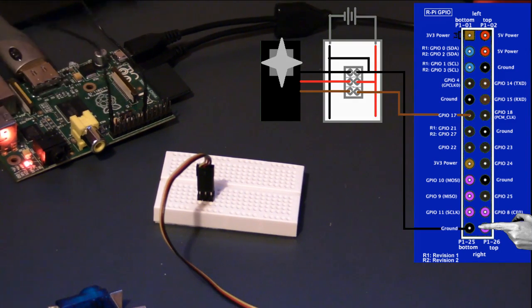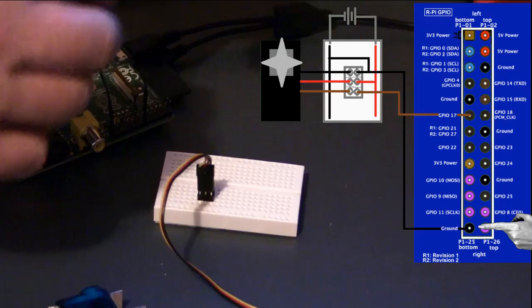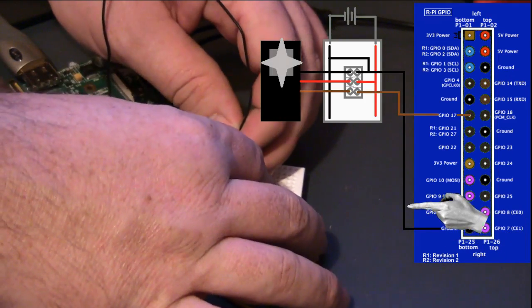First, I'll connect this lead from the ground on the Raspberry Pi to the jumper header with the black wire coming from the servo motor.